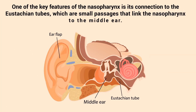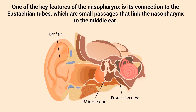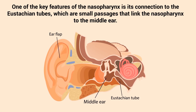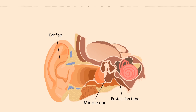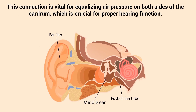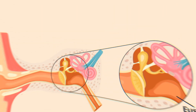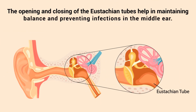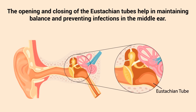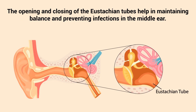One of the key features of the nasopharynx is its connection to the eustachian tubes, which are small passages that link the nasopharynx to the middle ear. This connection is vital for equalizing air pressure on both sides of the eardrum, which is crucial for proper hearing function. The opening and closing of the eustachian tubes help in maintaining balance and preventing infections in the middle ear.